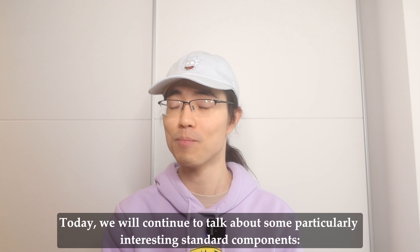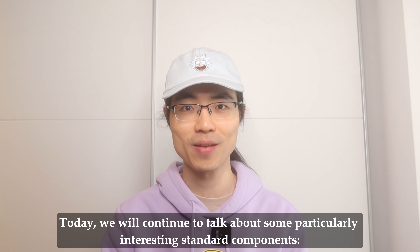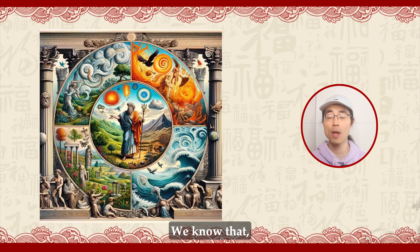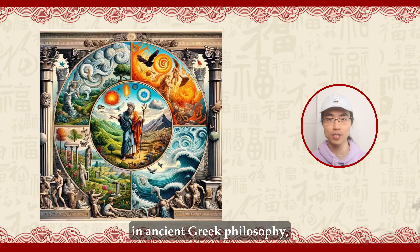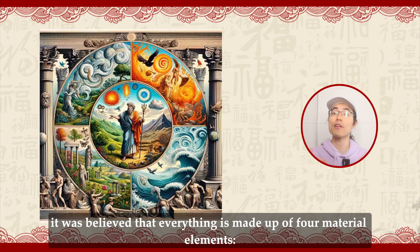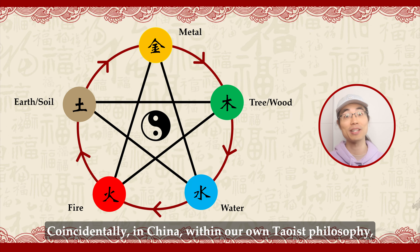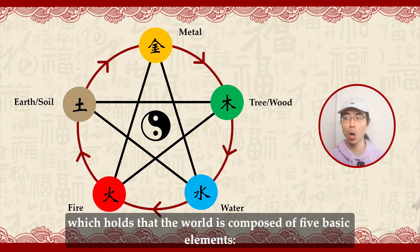Today we'll continue to talk about some particularly interesting standard components — these five radicals. We know that in ancient Greek philosophy, it was believed that everything is made up of four elements: earth, air, water, and fire. And coincidentally, in China, within our own Taoist philosophy, there is a similar concept which holds that the world is composed of five basic elements.